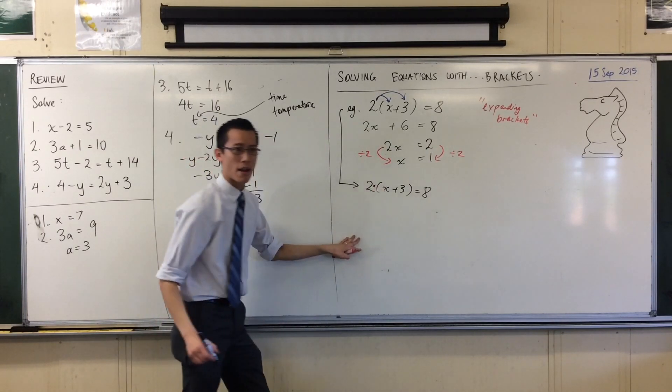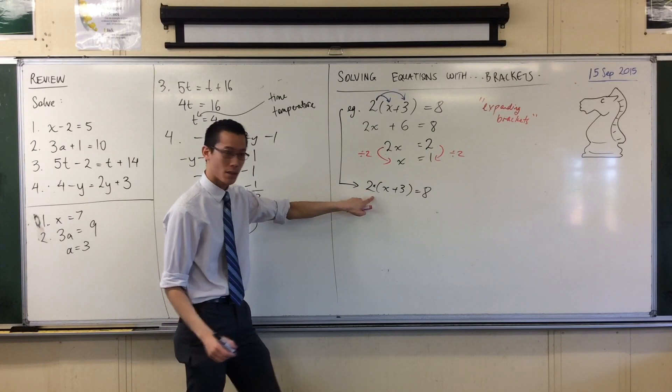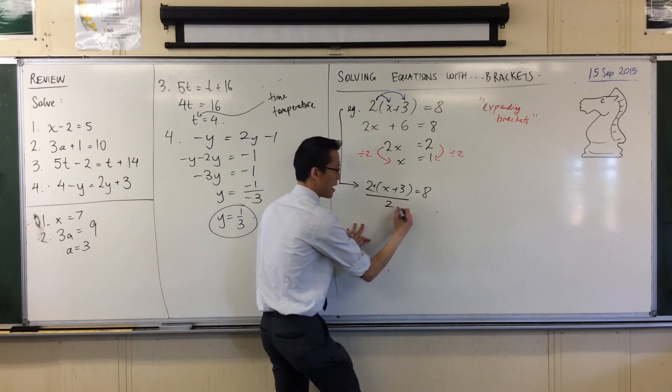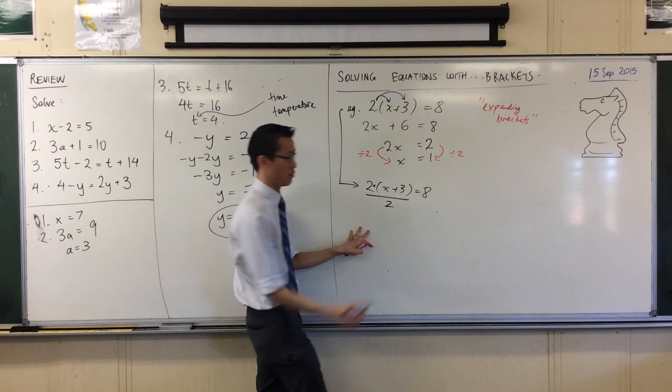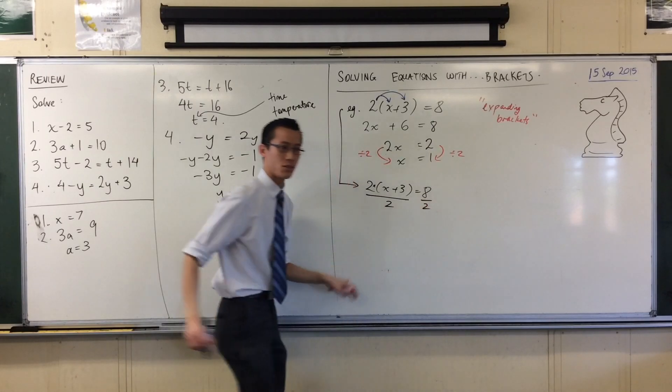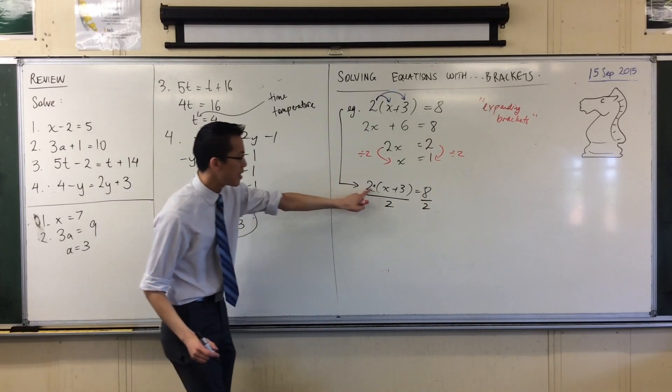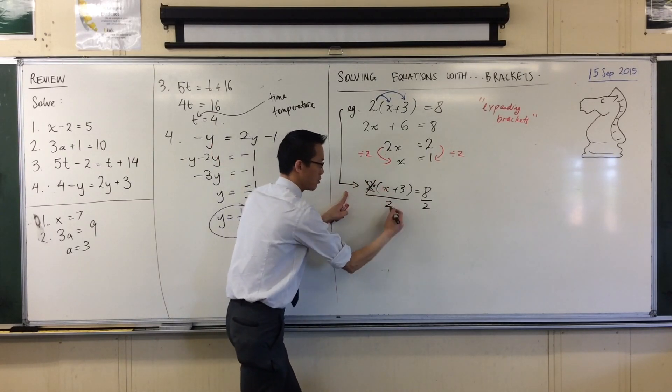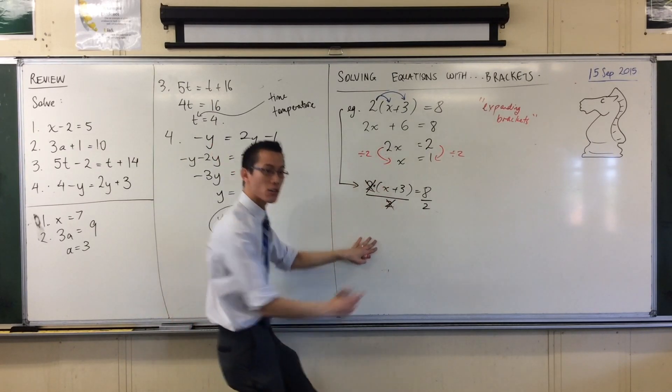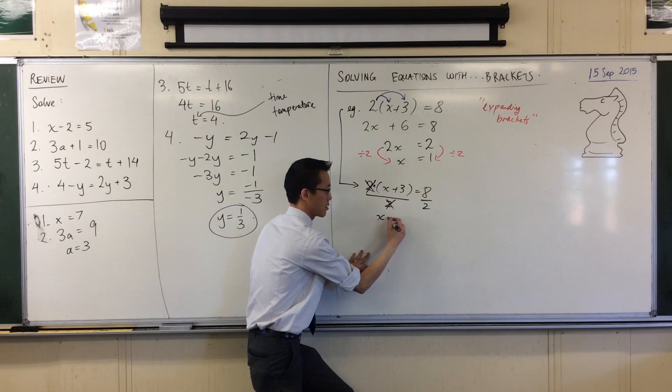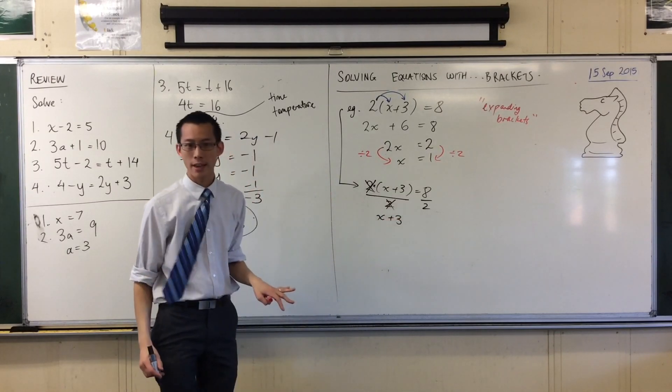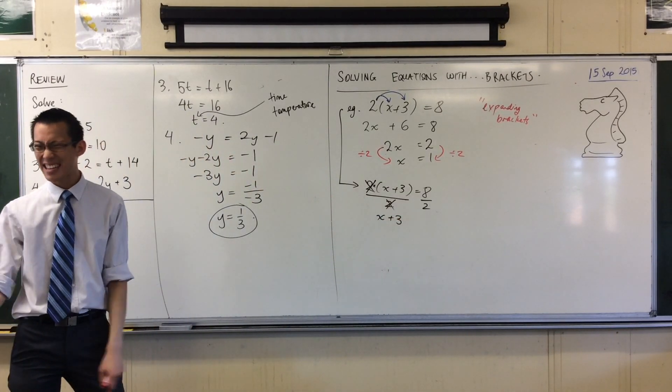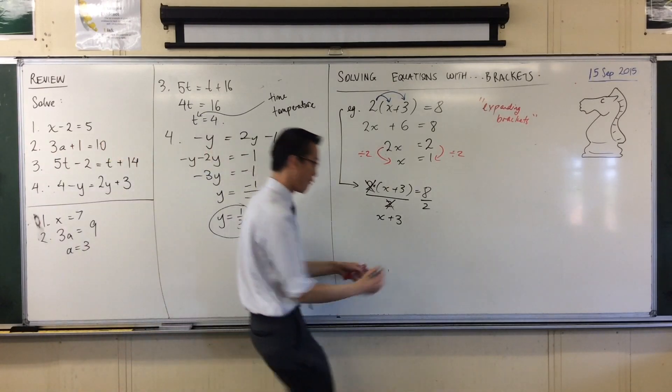This is 2 times, right? So that 2 times will get eliminated by this divided by 2. Do it to the left, do it to the right. So here, these 2s will cancel. Exactly right. Cancel, cancel. So on the left, I'll just get left with x plus 3. Now, what happens on the right-hand side? 8 divided by 2, 4.